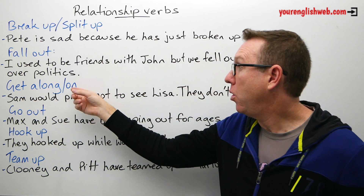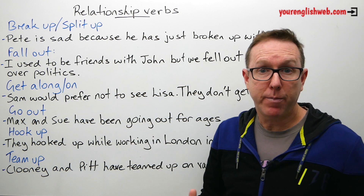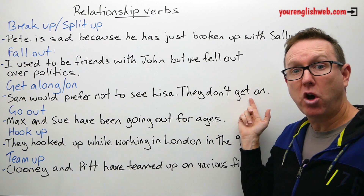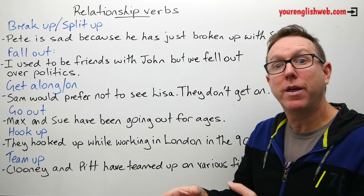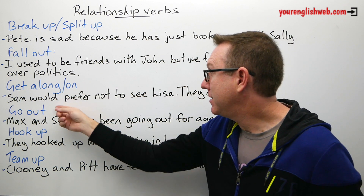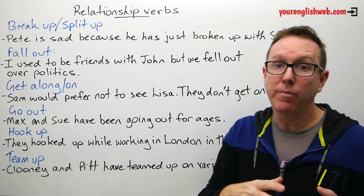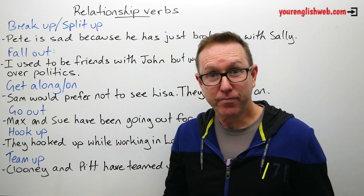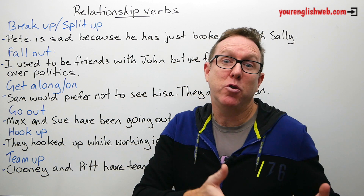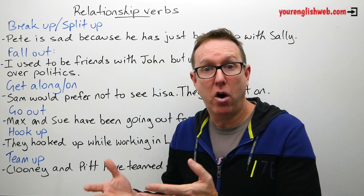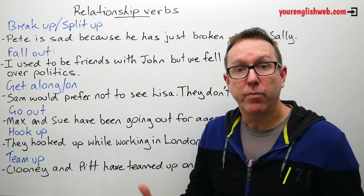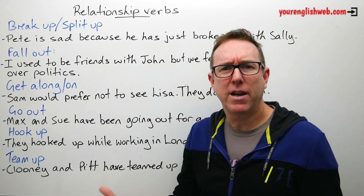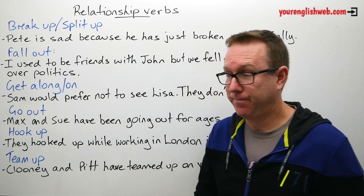The next verb is 'get along' or 'get on,' normally used with 'with.' For example: Sam would prefer not to see Lisa — they don't get on with each other. Get along and get on are both perfectly fine; there may be slight regional differences between US and UK usage, but they're more or less interchangeable. When you don't get along with someone, it means you don't have a good relationship — you fight or you don't agree with each other.